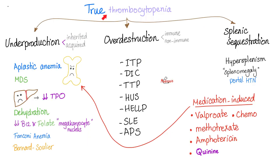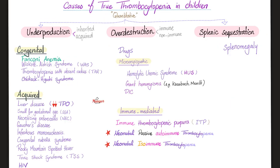True thrombocytopenia — not to be confused with the pseudo/false type — is divided into problems with underproduction, over-destruction, or splenic sequestration of platelets. Underproduction can be congenital or acquired diseases. Over-destruction can be caused by medications, diseases such as HUS, giant hemangioma (which also acts like a spleen and swallows platelets), DIC, or immune-mediated causes — and that last one is today's topic.